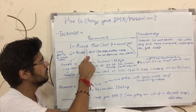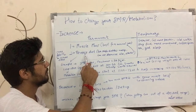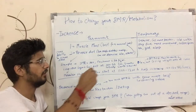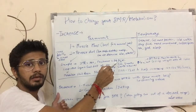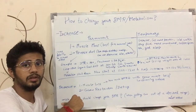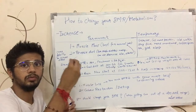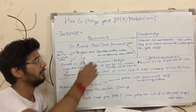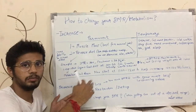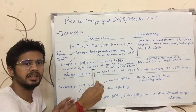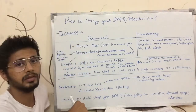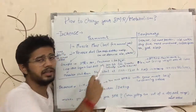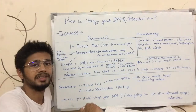So those were two permanent methods. When you have reverse dieted and brought your maintenance back up to 2400, or when you have gained a significant amount of muscle mass and your BMR has increased significantly, it is not going to decrease abruptly. Now let's talk about temporary ways of increasing BMR — exercise.